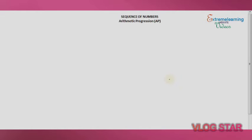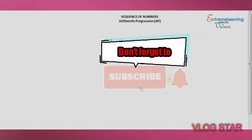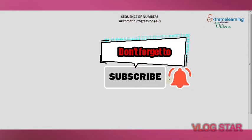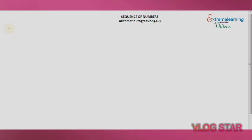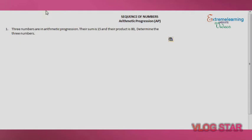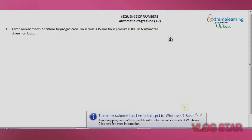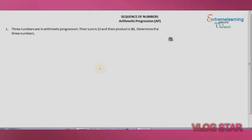Welcome back to my channel. Today I'll be giving you some examples. The question on the board is on AP — arithmetic progression. Three numbers are in arithmetic progression, their sum is 15 and their product is 80.